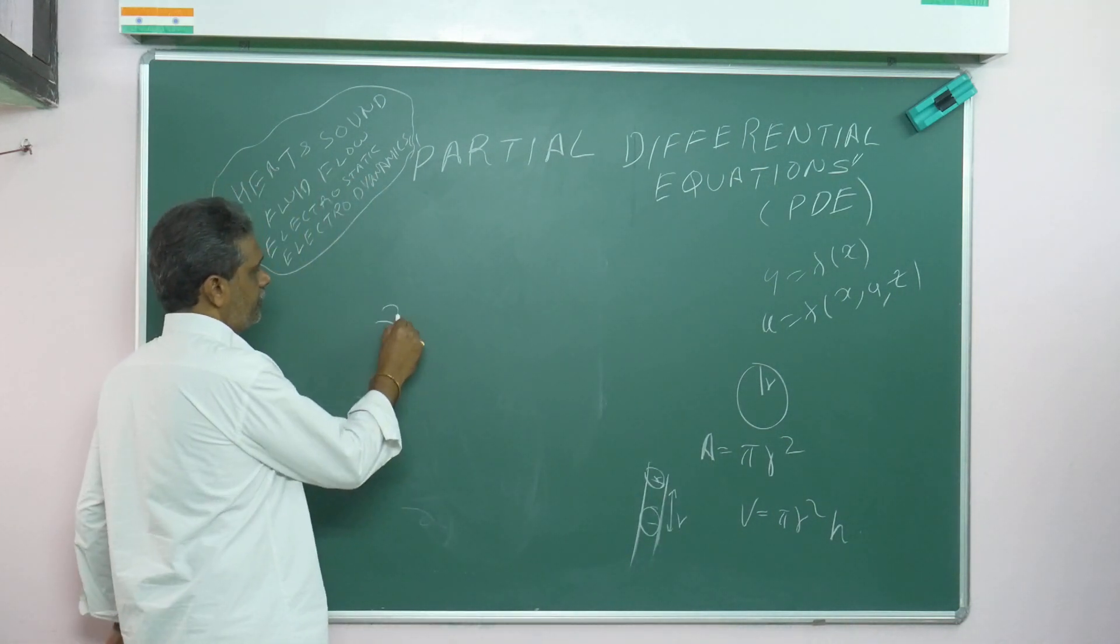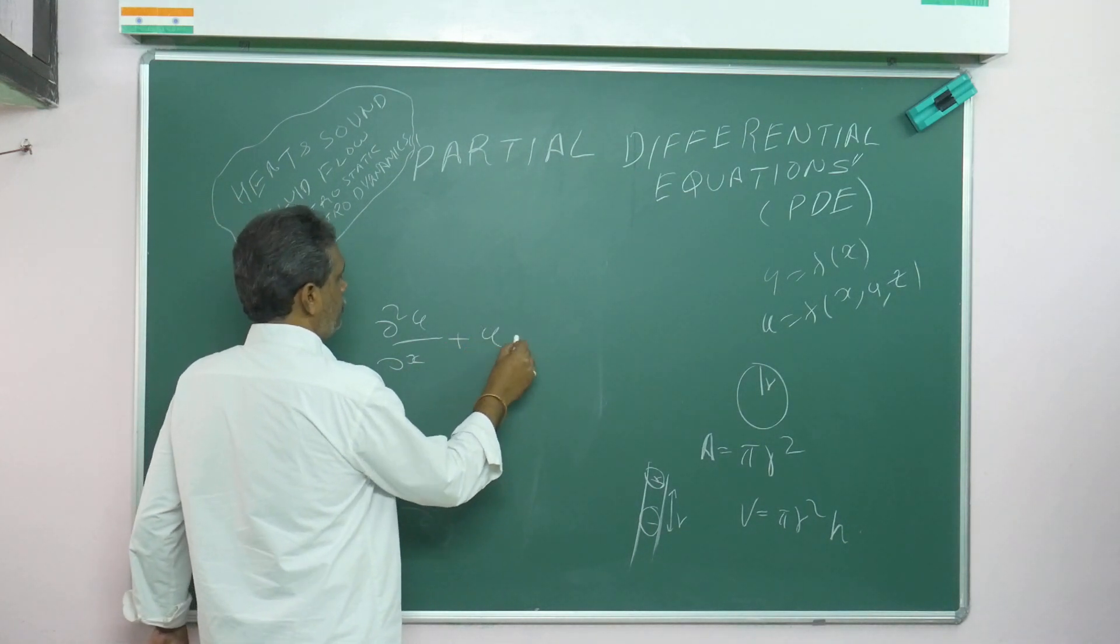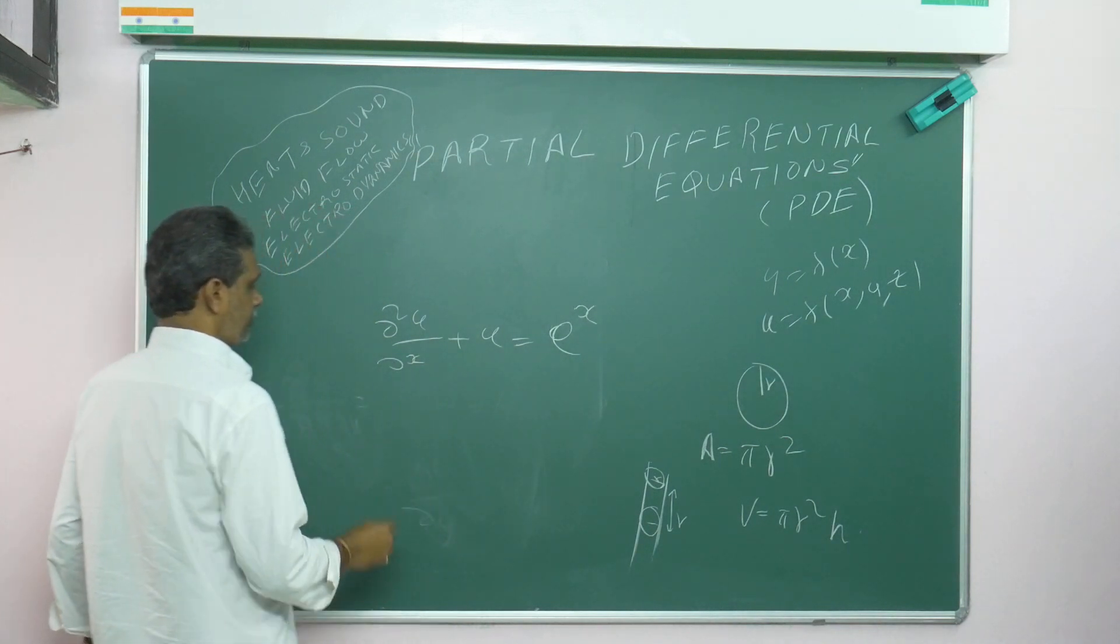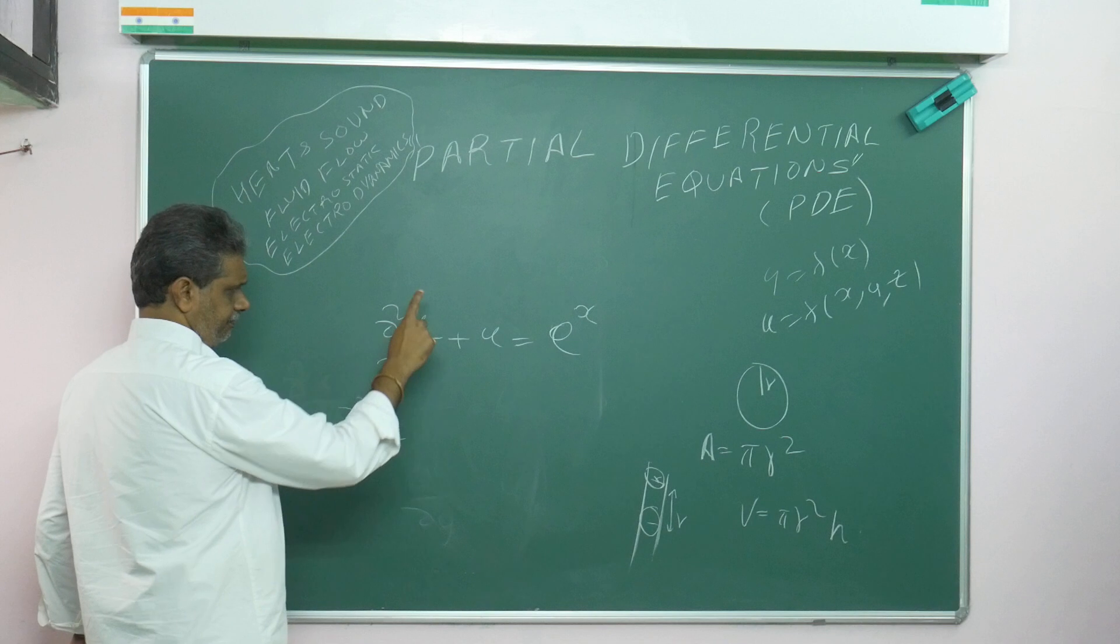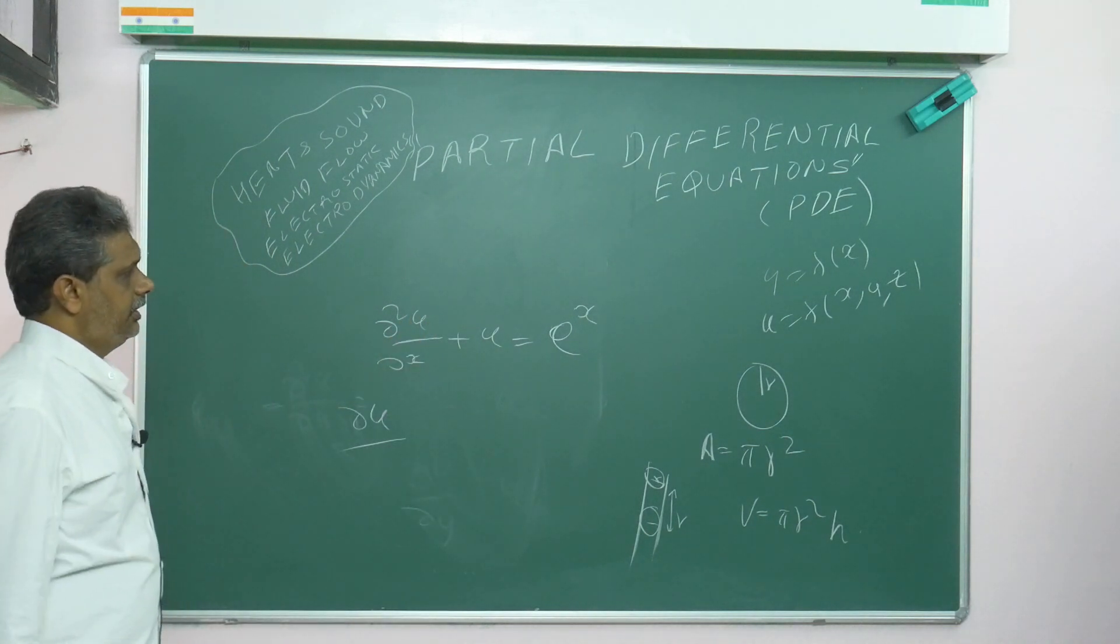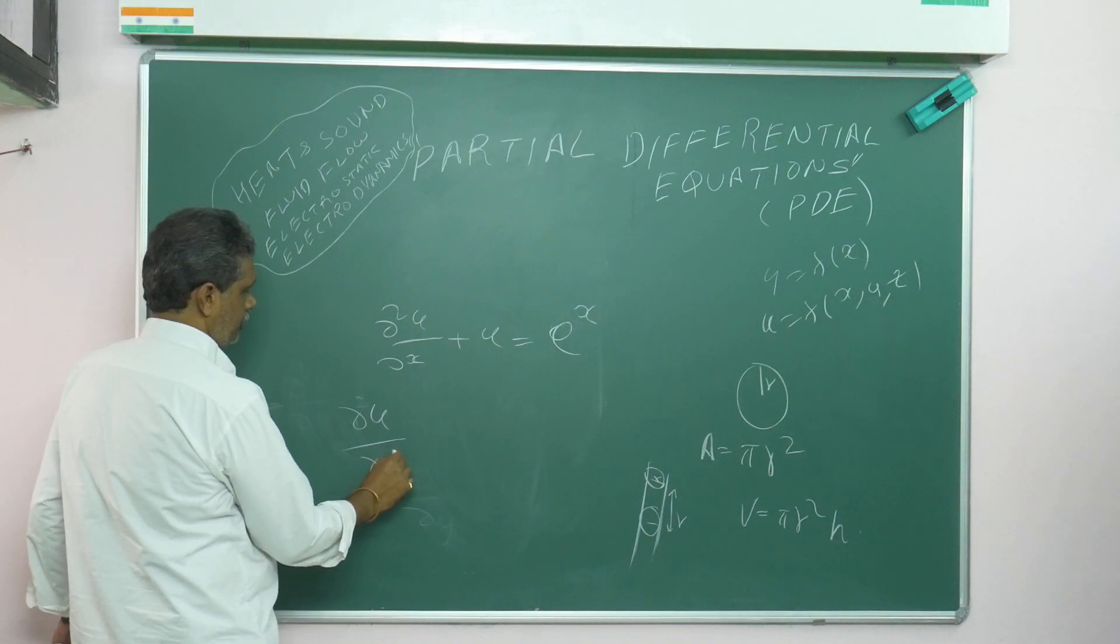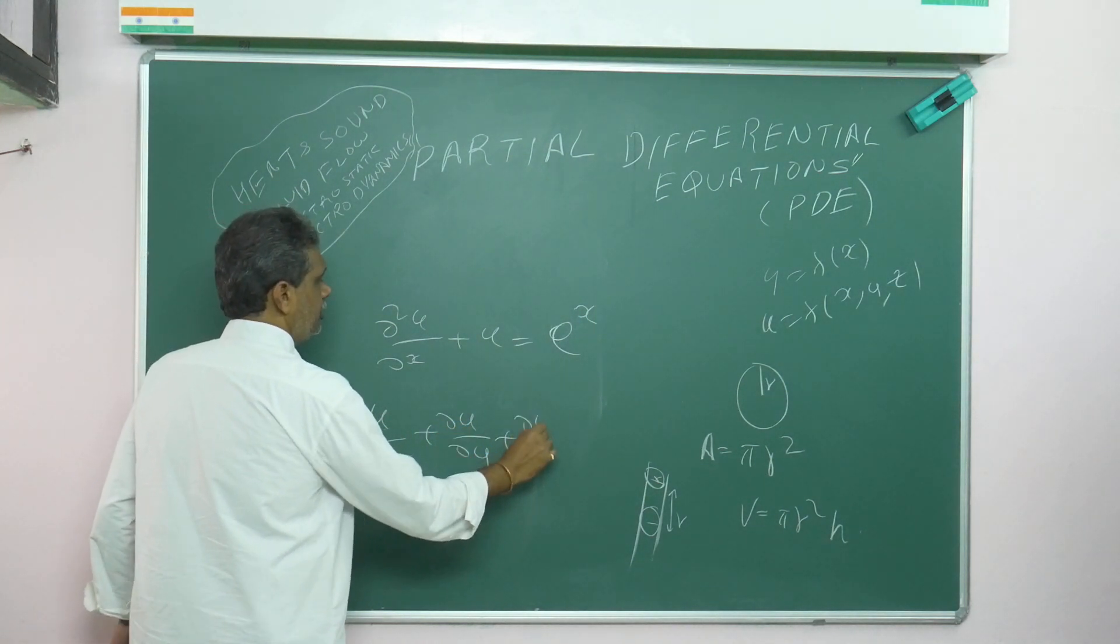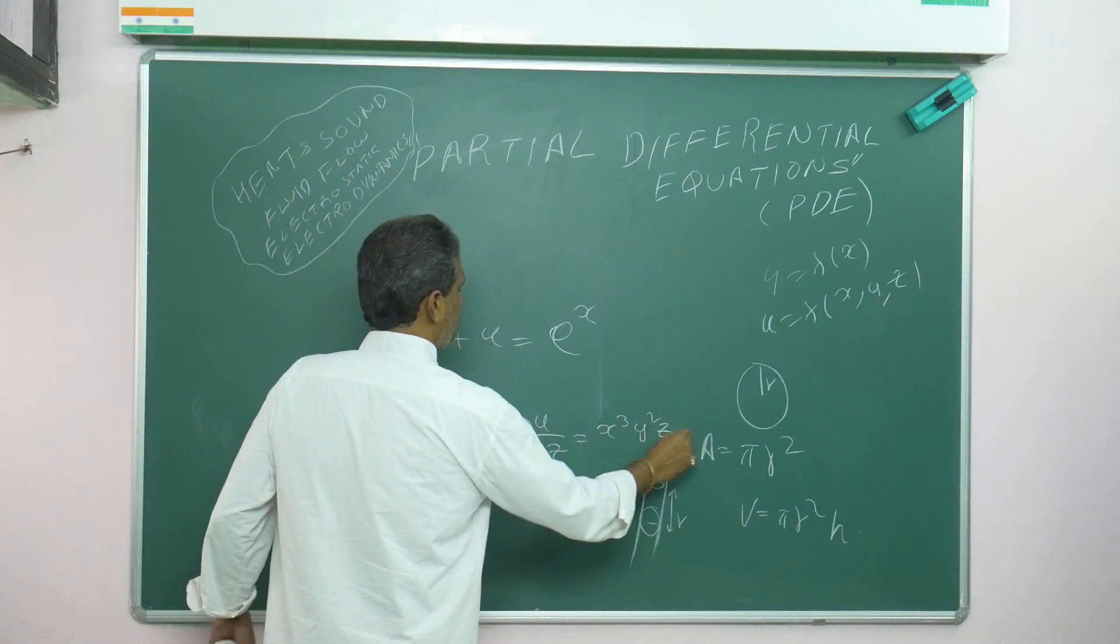For example, ∂²u/∂x² plus u equals e^x—this is also a PDE. Here, u is the dependent variable and x is independent. Or, ∂u/∂x plus ∂u/∂y plus ∂u/∂z equals xy²z—this is another PDE.